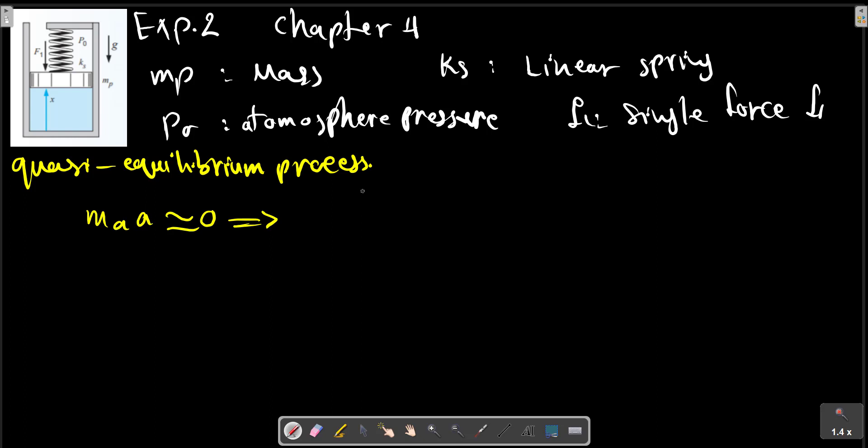In this case, we have sigma F in the y-direction should be zero. So sigma F in positive direction minus sigma F in negative direction equals zero. We can also write for the top, we have sigma F equals P times A, the pressure inside the cylinder multiplied by the cylinder area.